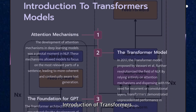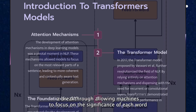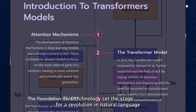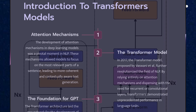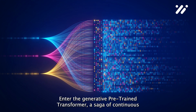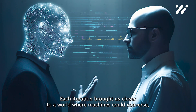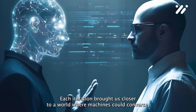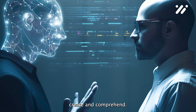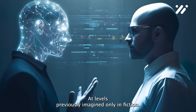Introduction of Transformers. The plot thickens with the introduction of Transformers, a breakthrough allowing machines to focus on the significance of each word in its context. This technology set the stage for a revolution in natural language processing. Enter GPT, the generative pre-trained Transformer — a saga of continuous evolution from its first version to the groundbreaking GPT-3. Each iteration brought us closer to a world where machines could converse, create, and comprehend at levels previously imagined only in fiction.